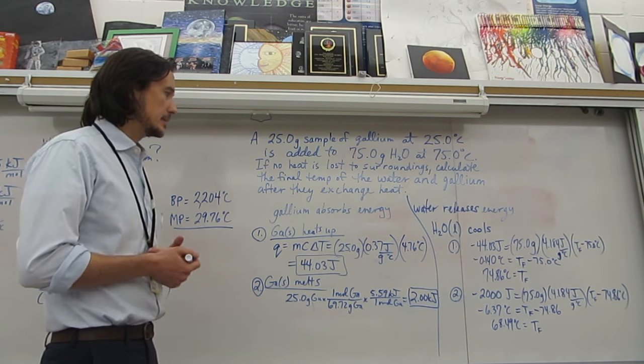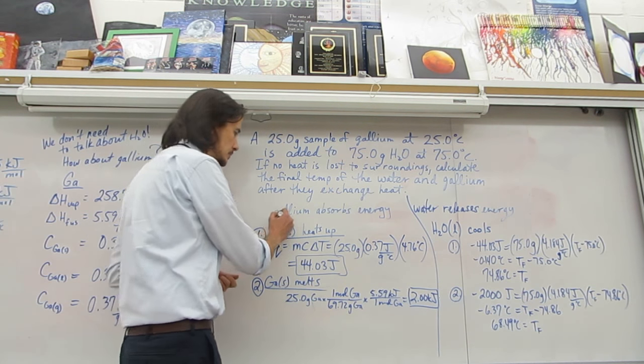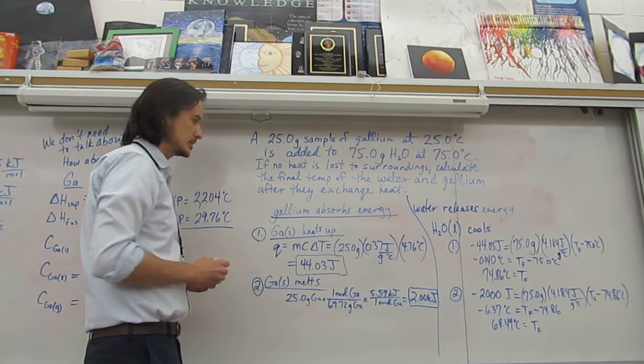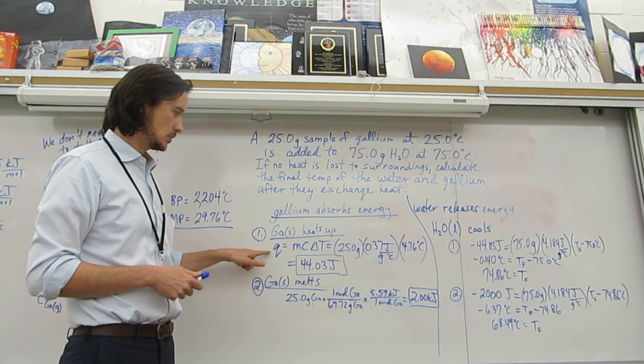So what you want to do is think about this and break it into steps. So step one: gallium is absorbing the energy, but first part it's going to heat up to its melting point. And so q equals mc delta T.